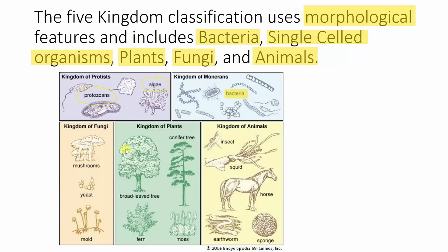Then we have plants, which we know quite a lot about — we've got a tree, some moss, and ferns, which are non-flowering plants. Then we've got fungi, which includes mushrooms, yeast, and mould. Fungi aren't necessarily plants because they don't behave in similar ways — they don't usually photosynthesise; instead they get their nutrients from the ground and from decaying organisms. And then we have animals, which we're all very familiar with: insects, marine life, squid, horses, sea sponges, and earthworms.